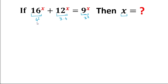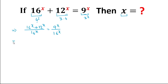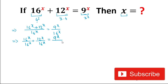We divide the left hand side by 16^x so that we can get a value of 1. So we take (16^x + 12^x) divided by 16^x, which equals 9^x divided by 16^x. Splitting it: (16^x / 16^x) + (12^x / 16^x) = 9^x / 16^x. The first term, numerator and denominator cancel, giving us 1.